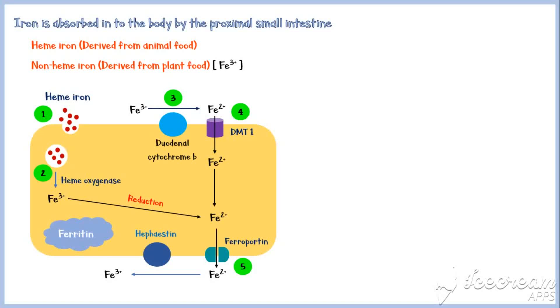To enter the circulation, ferrous should be converted back into the ferric form. This is enabled by a protein called hephastin, which is also located in the basolateral membrane, as indicated by number 6.